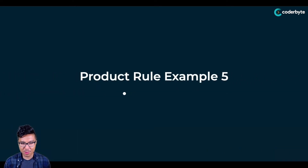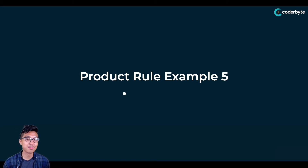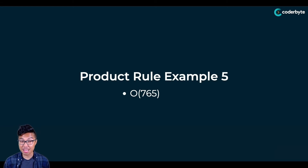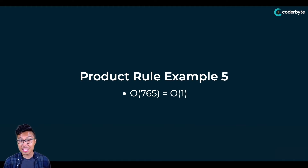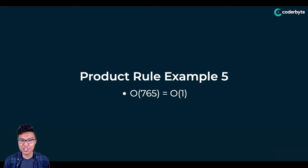For a final example: what if I asked you to simplify O of 765? The first thing you should notice is there's no input variable here. I can simplify this quantity of 765 to just O of one — we also call this constant time. The product rule is pretty intuitive: all you have to do is recognize what is a constant multiplier, and then you can just drop it.